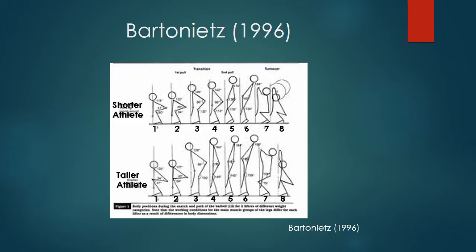It is important to understand the biomechanics for all types of athletes. Taller athletes start with more bending of the knees, as shown in the bottom figure, whereas the shorter athlete begins the first pull from a larger angle. Looking at the taller athlete's knees, they are at an angle of 47 degrees, whereas the shorter athlete is at 80 degrees.